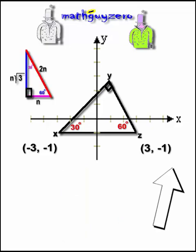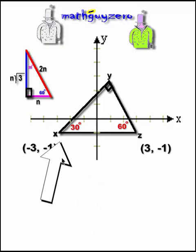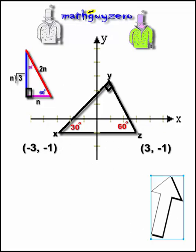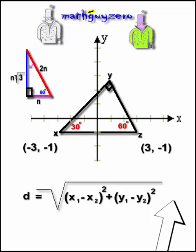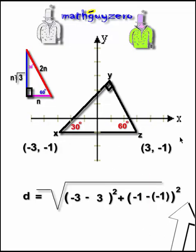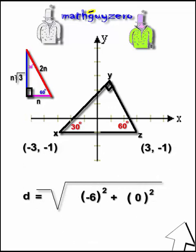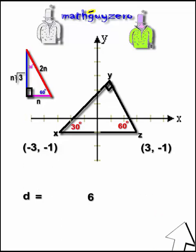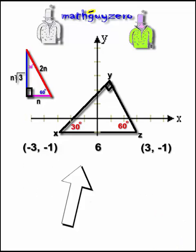Let's go ahead and figure out what the lengths of these sides are by using the distance formula. So we're going to find out how long this x, z leg is by using this. So negative 3 minus positive 3, that's our first part, negative 1 minus negative 1 is our second part. Do a little bit of math. A little bit more math.